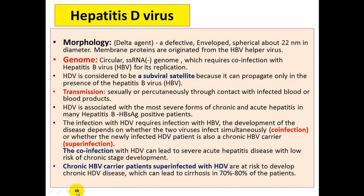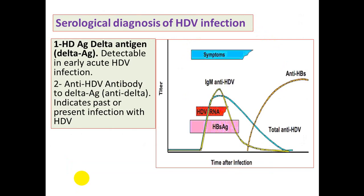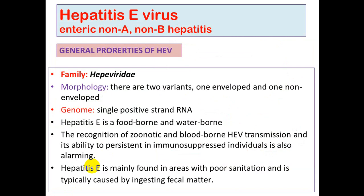Now moving to hepatitis E virus, originally called enteric non-A non-B hepatitis — whereas hepatitis C virus was originally called serum non-A non-B hepatitis. The difference is: hepatitis E virus is enteric (food and waterborne), while hepatitis C virus is serum (bloodborne).